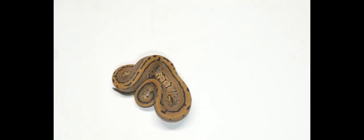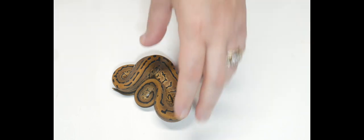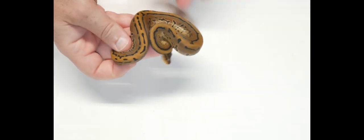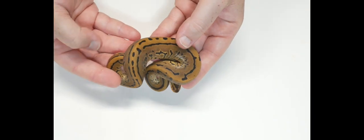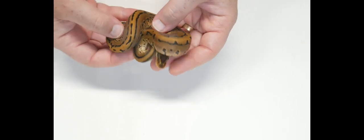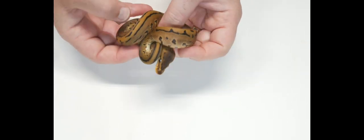This is number seven. This one here is not a holdback, it is our second het of the clutch. This is a mystic leopard pinstripe het clown and it's a male also.